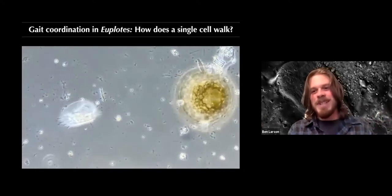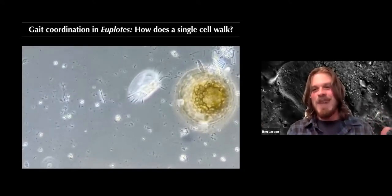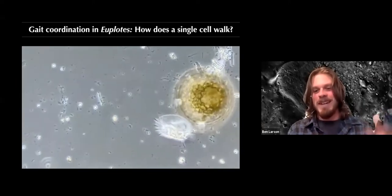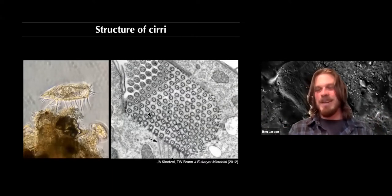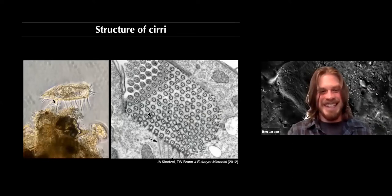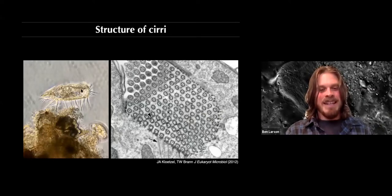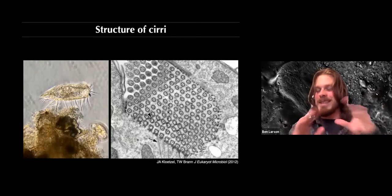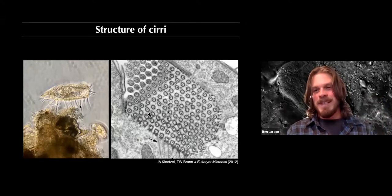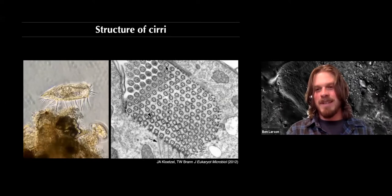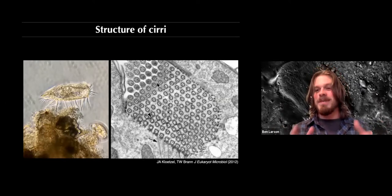The question that immediately emerges is: how is a single cell, without any nervous system or brain, walking around like this? The first-order answer is using, in the species I've studied most, 14 tiny little legs. You can see this Euplotes cell perched on a piece of detritus — it has a front and a back. On the front is a fringy membranellar band used to generate feeding currents and engulf prey. The appendages sticking down from the cell are called ciri, and the cell uses them for walking. A cross-section at the base of a cirrus shows they're composed of bundles of cilia.